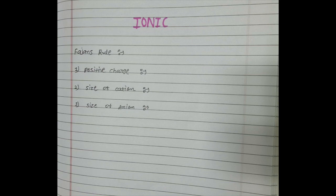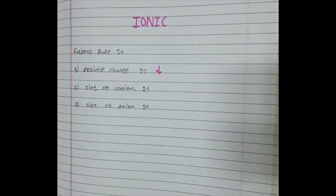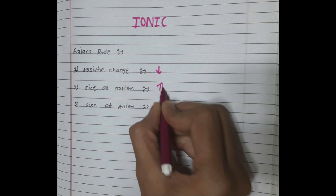In this lecture we only discuss about the ionic compound. For Fajans' rule, for an ionic compound, the positive charge on the cation is always less. When the positive charge is less, that means this compound is most ionic. In the same way, where the size of the cation is more, that means this compound is ionic, and where size of cation is less, that means this compound is covalent. So for the ionic compound, size of cation is more.